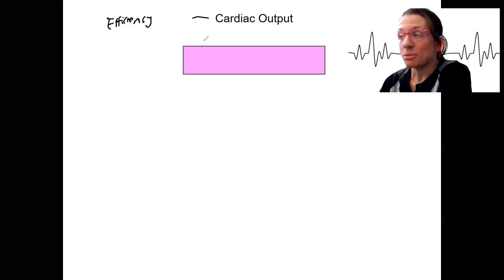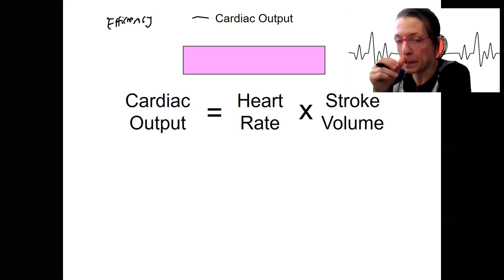Cardiac output is dependent on two factors: heart rate and stroke volume. Two different components you already know about. The abbreviations you'll see for this: cardiac output CO equals heart rate HR times stroke volume SV.